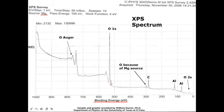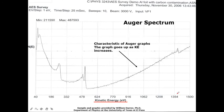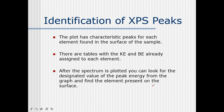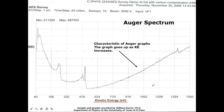For example, with this particular spectrum we can compare it to the provided library and identify that aluminum is the unknown source. This identification works not only through the XPS spectrum — we can also compare the auger spectrum to the library and confirm that yes, it is aluminum that is given as the unknown sample system.